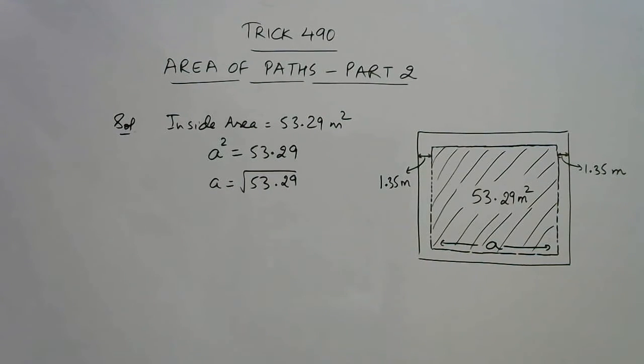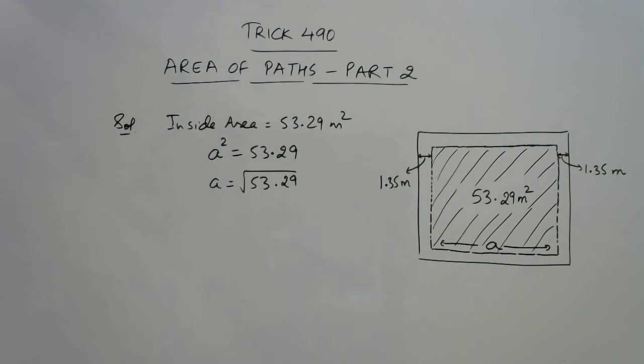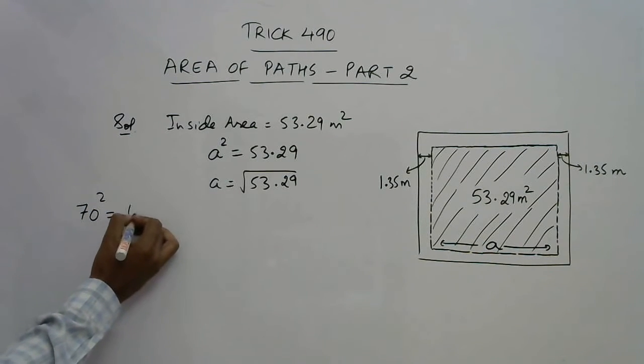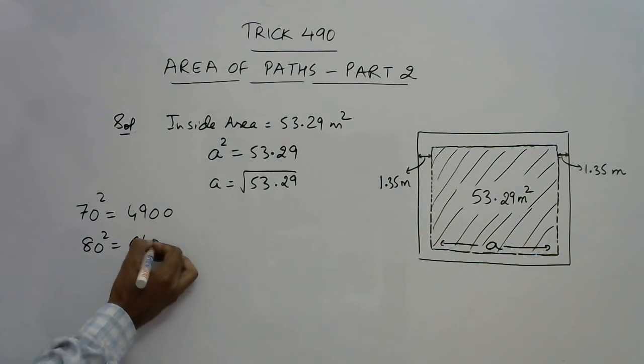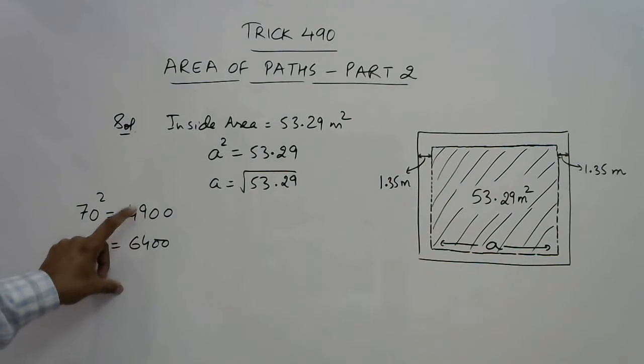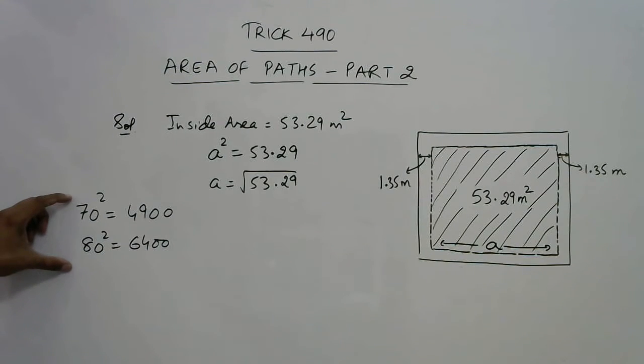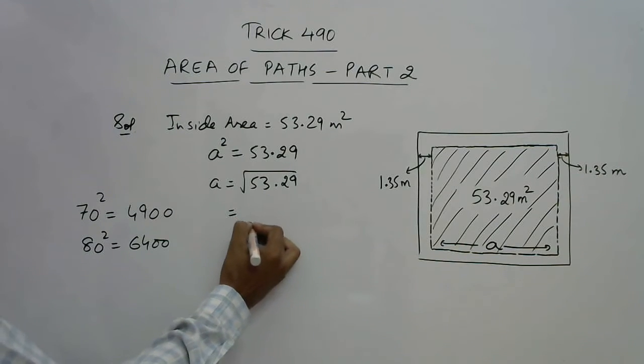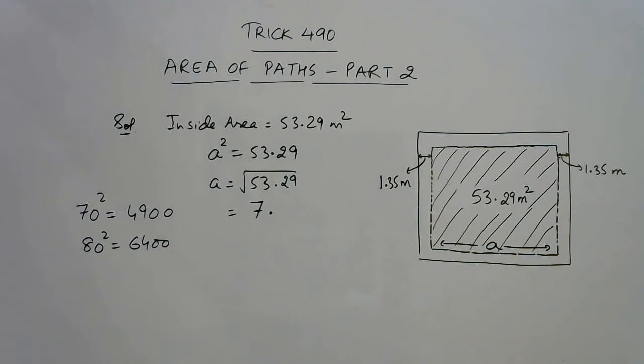Now we are going to use a shortcut to find the square root of 53.29. See, 70 square is 4900 and 80 square is 6400, and the number, if we do not count the decimal, 5329 lies between these two squares. So our answer will lie between 70 and 80. The square root of 53.29 will start with 7 point something.